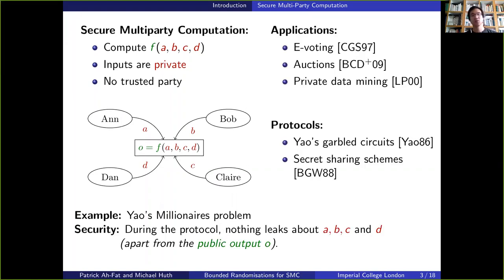So applications of secure multi-party computation include e-voting, auctions and private data mining. And since the 80s, protocols have been designed in order to achieve SMC. These protocols fall into two main categories. The first one is based on Yao's garbled circuits.